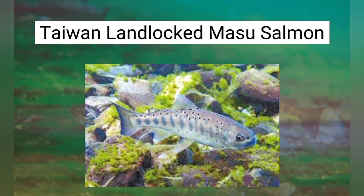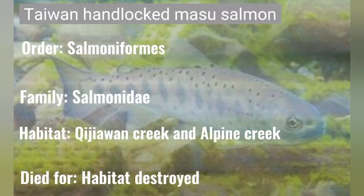Taiwan Landlocked Salmon — order: Salmoniformes, family: Salmonidae. Habitat: Kagai Creek and Alphan Creek. Died due to habitat destruction.